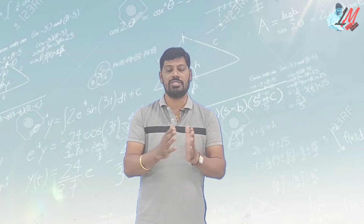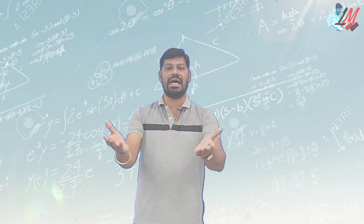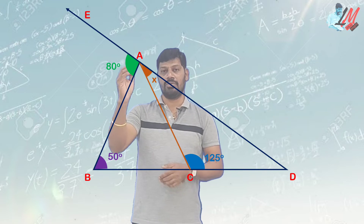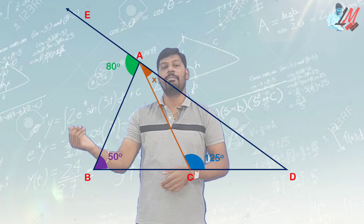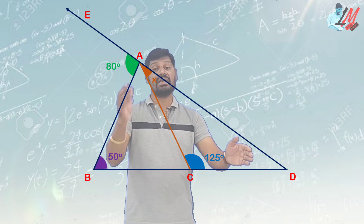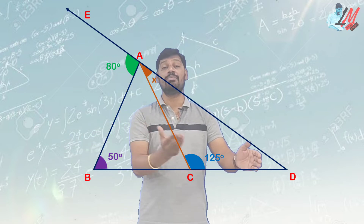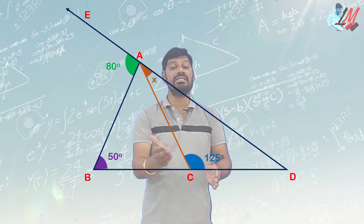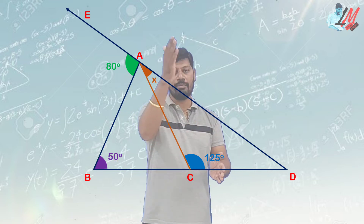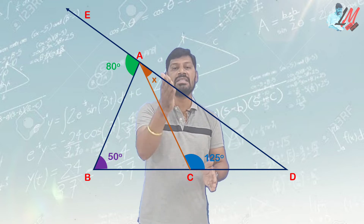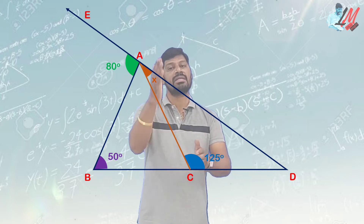In the NMMS 2015 SAT paper, let's look at the diagram. We have a diagram with points A, B, C, D.